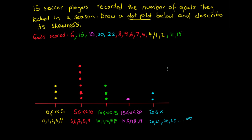So that is how we first construct our dot plot. We can see that our mode — our most frequent number — is all the way down here. We could also work out other stats like our average, range, or median. But what we've been asked to do is draw the dot plot, which we've done. Now we need to describe its skewness.